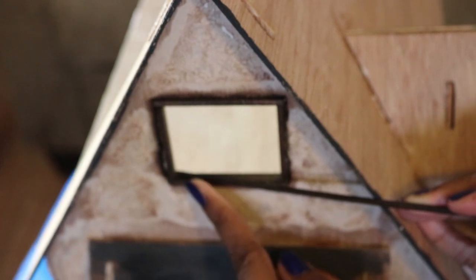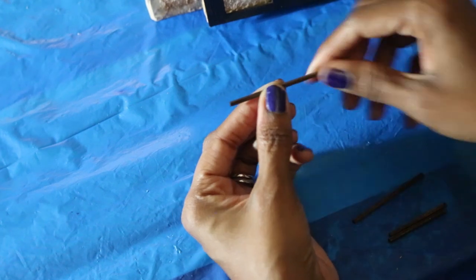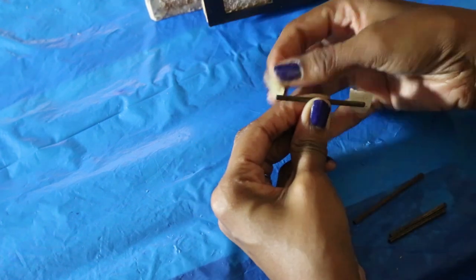I make the window frame by measuring and cutting the 1/8th inch wood, once again starting with the horizontal pieces. Once the wood is cut, I put tape on the ends of the horizontal pieces.